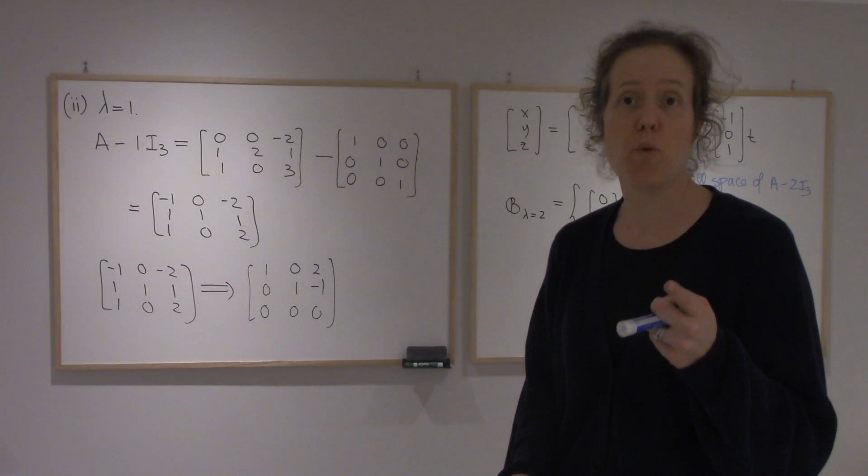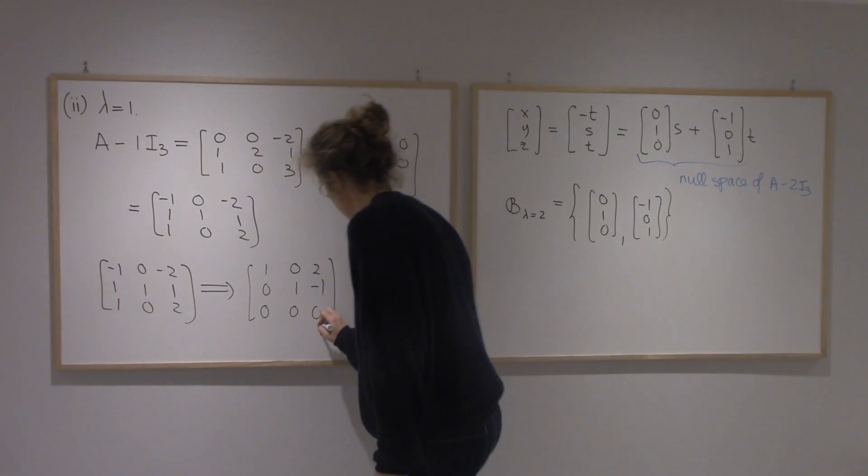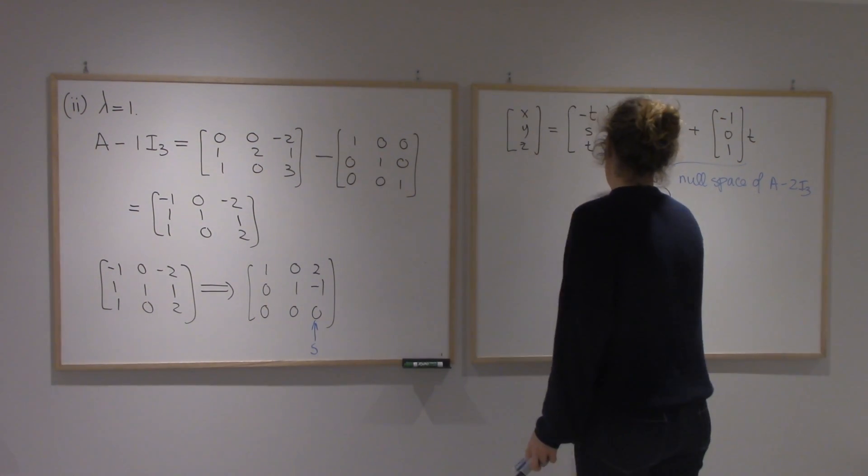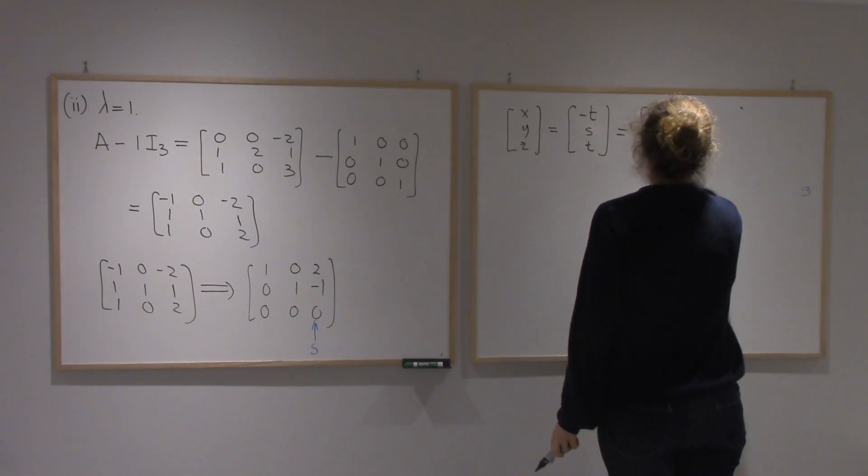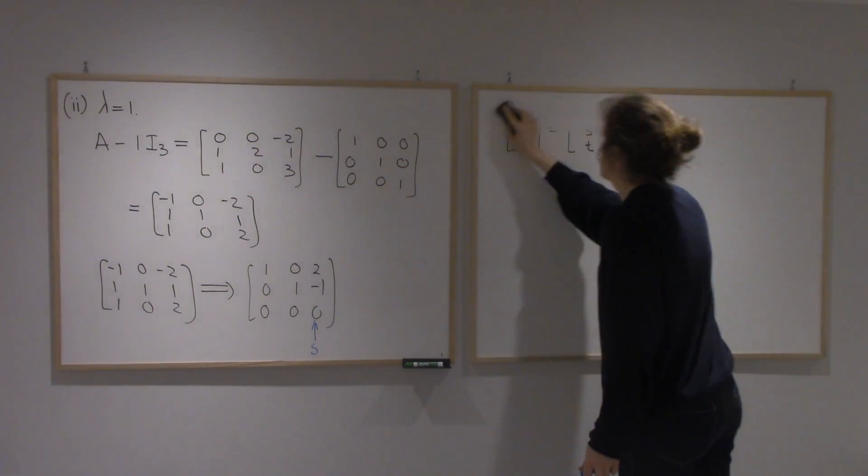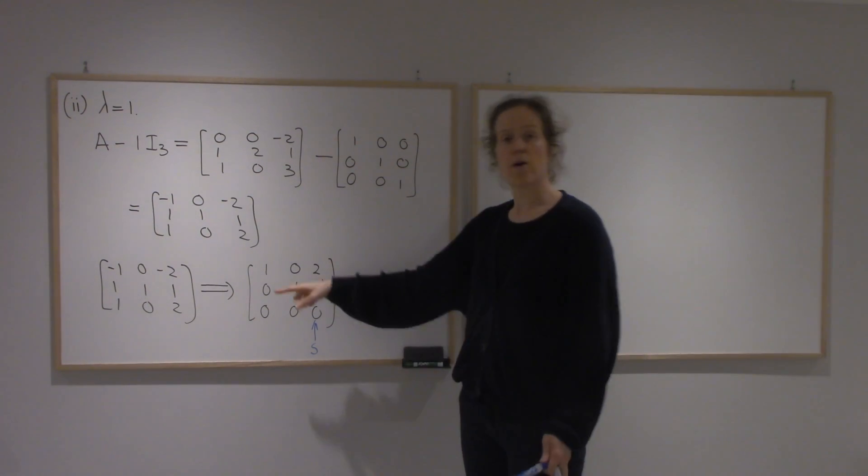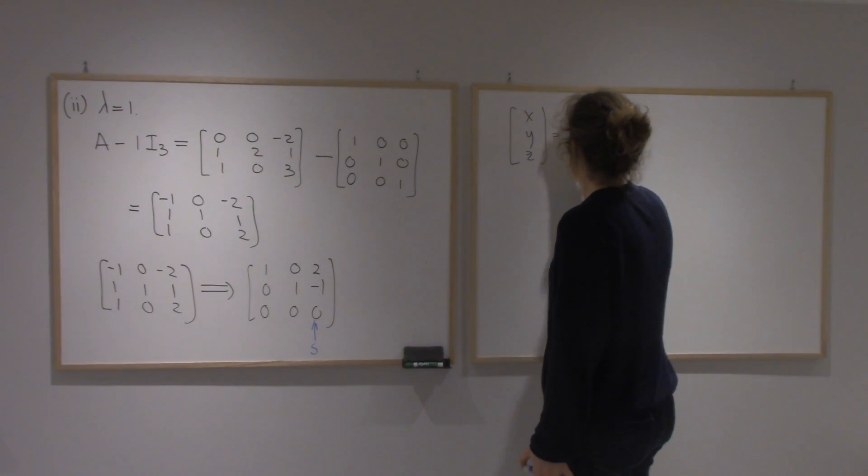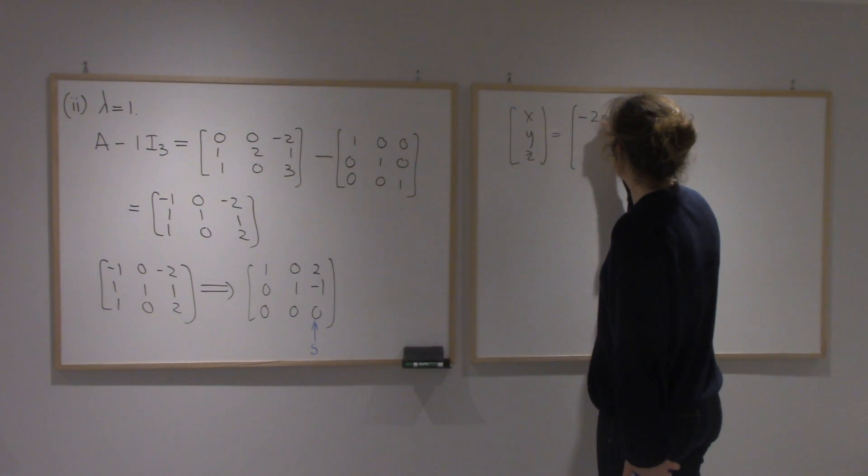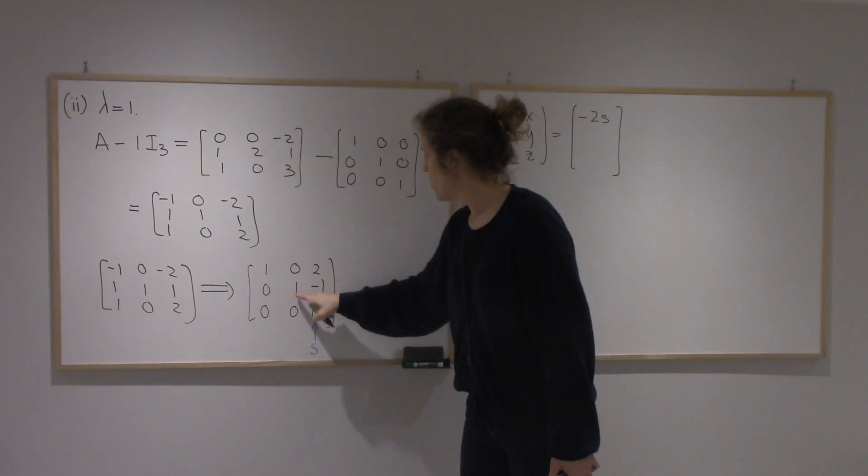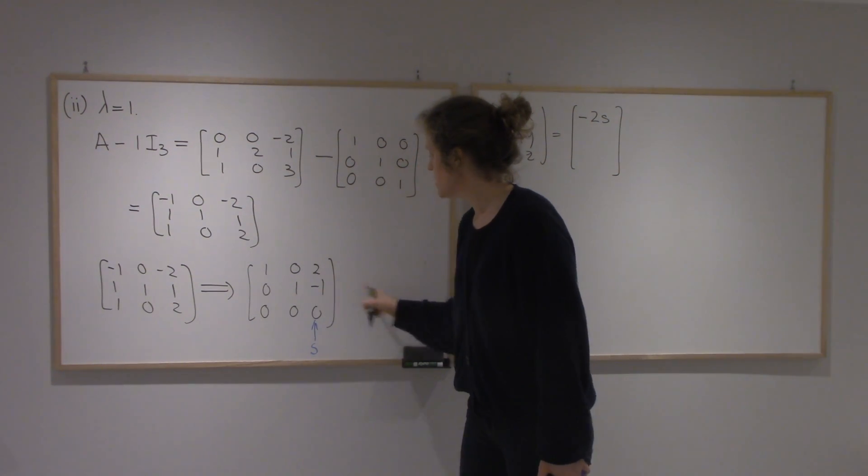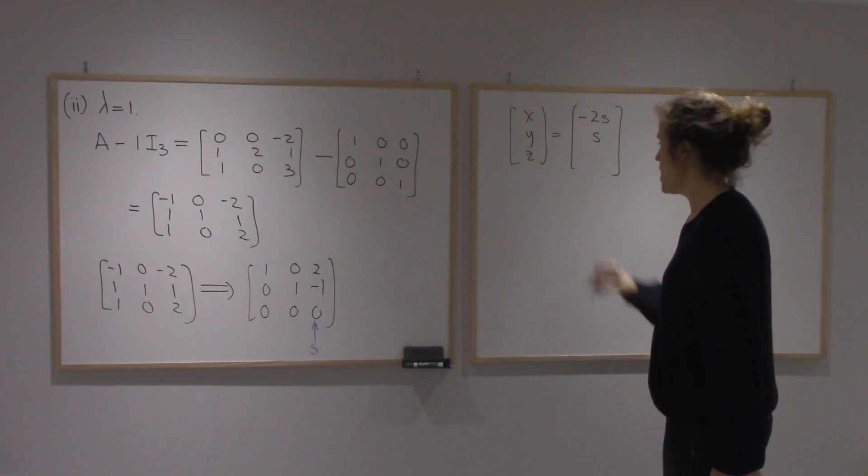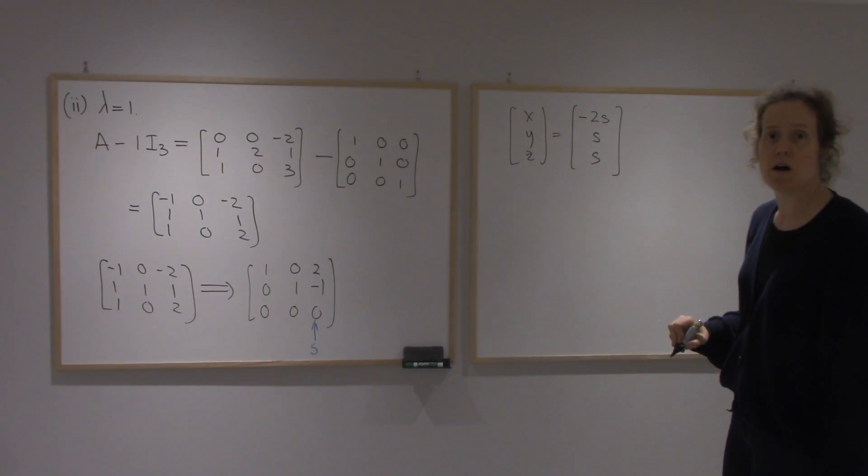This time I only have one free variable. From the first row, I get that x is minus 2z. From the second row, y plus z is zero, so y is the same as z, and then z is our free variable, so I'll call it s.